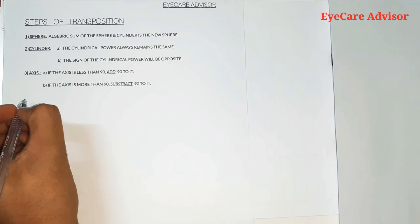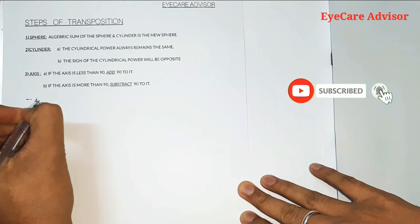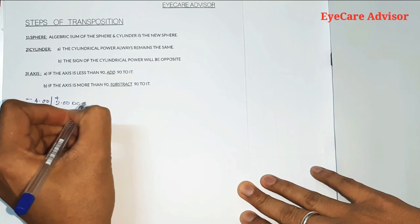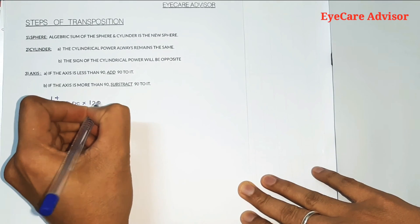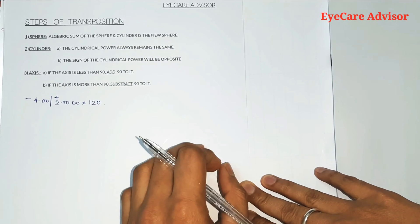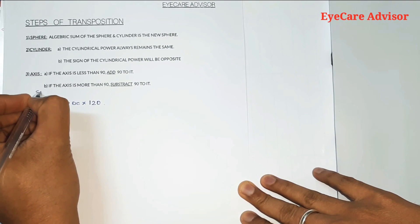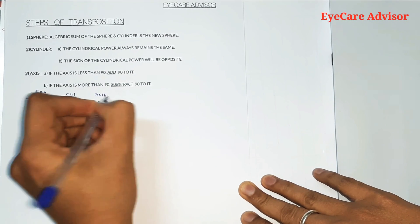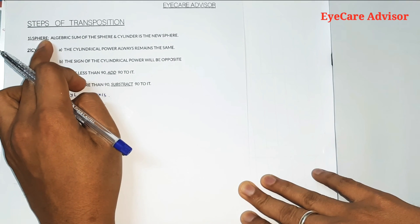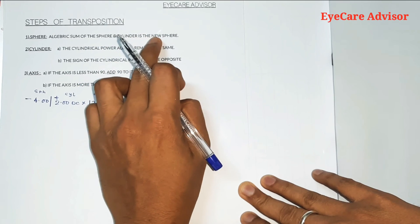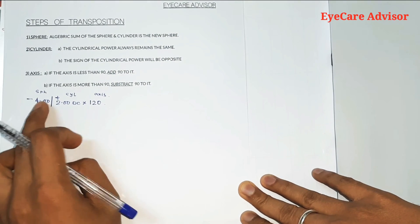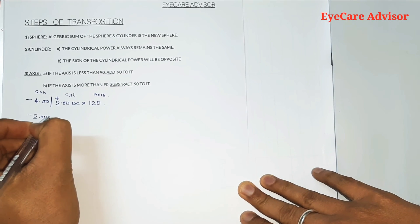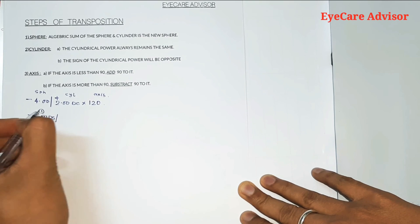Let's start with Example 1. Suppose we have minus 4 spherical with plus 2 cylindrical, and the axis is 120 degrees. We want to transpose this. Step one: the new sphere is the algebraic sum of the sphere and the cylinder — that is minus 4 plus 2, which equals minus 2 diopters. So the new sphere is minus 2.